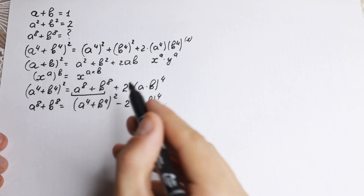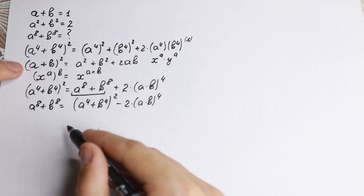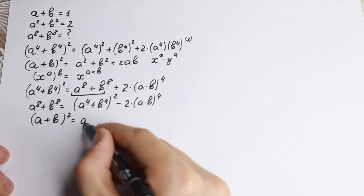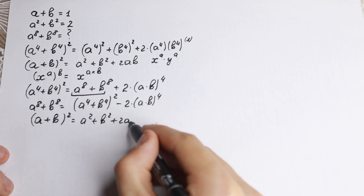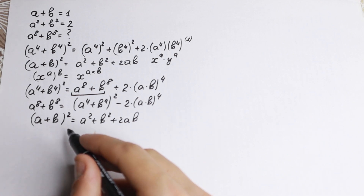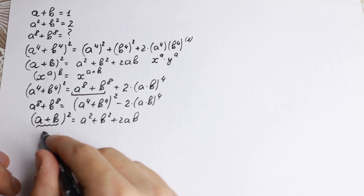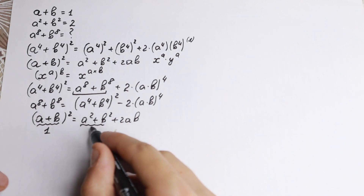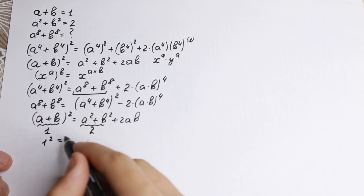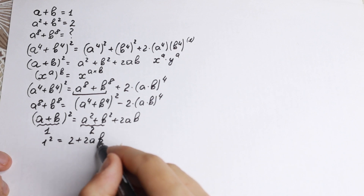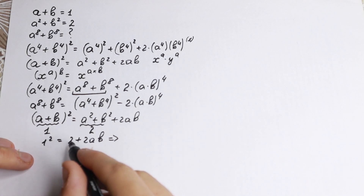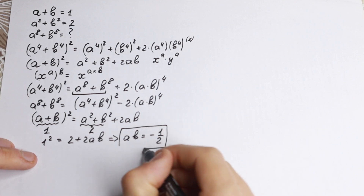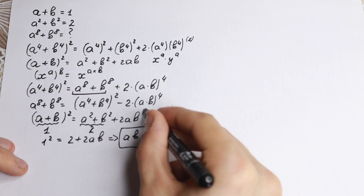Let's find these elements. Starting with the formula (a+b)² = a²+b²+2ab. We know a plus b equals 1 and a squared plus b squared equals 2, so substituting: 1 squared equals 2 plus 2ab. From this, 1 minus 2 equals 2ab, giving us ab equal to minus one half.